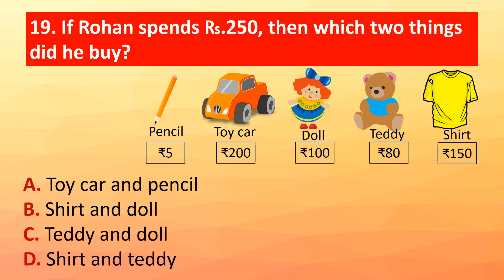Question 19: If Rohan spends rupees 250, which two things did he buy? Pencil: ₹5, Toy car: ₹200, Doll: ₹100, Teddy: ₹80, Shirt: ₹150. The correct answer is option B: shirt and doll.